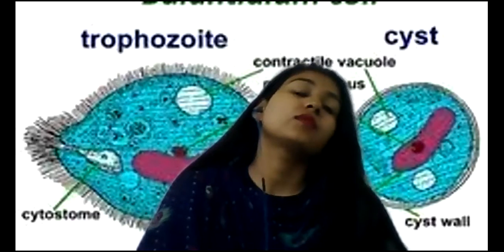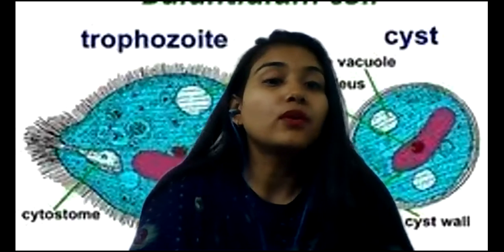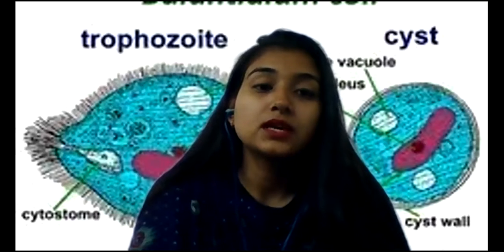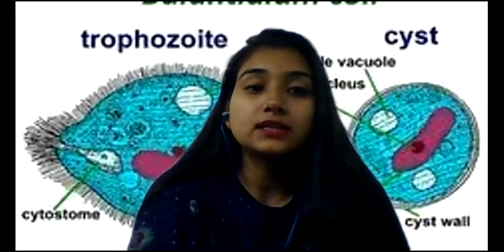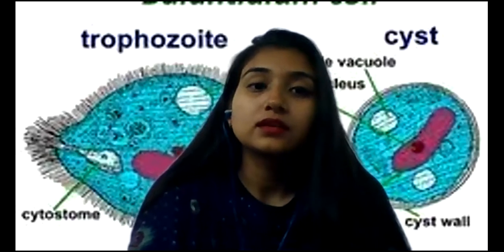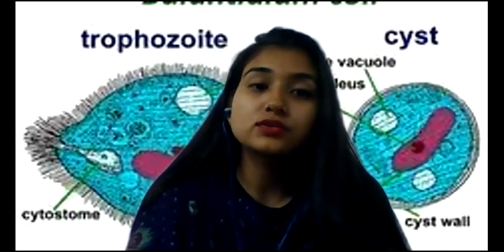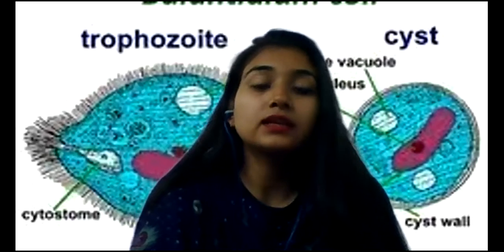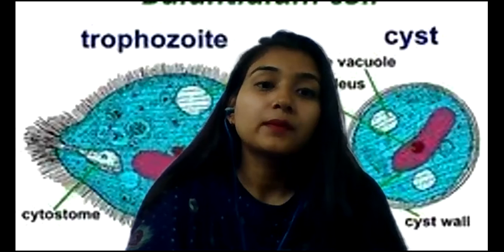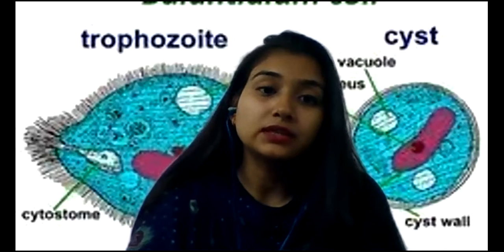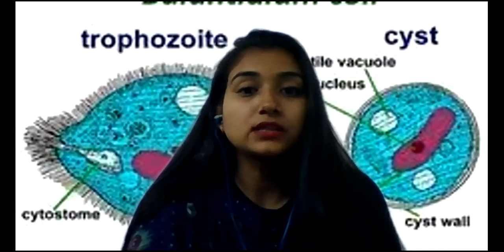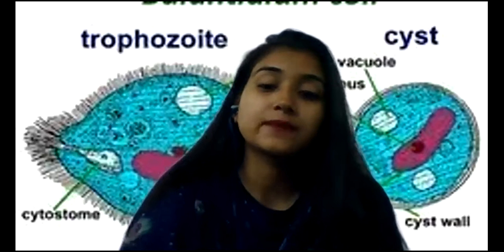More information: Balantidium coli has two forms — first, the trophozoite, and second, the cyst. Trophozoites are found in dysentery and acute cases, while cysts are found in carrier and chronic cases. Both forms are binucleate, having a large macronucleus and a small micronucleus.